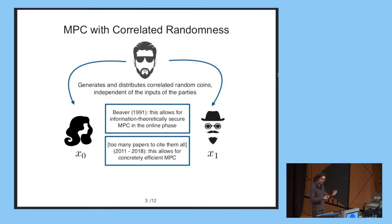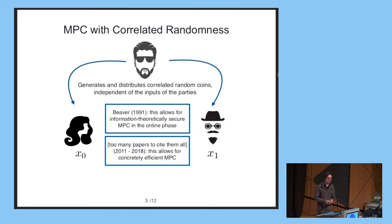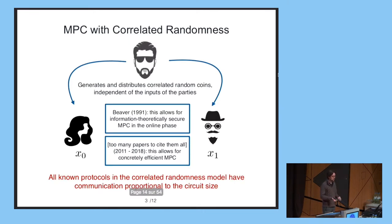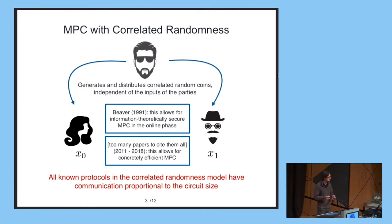These protocols work in two phases. In a pre-processing phase, the parties jointly generate some correlated random coins. Then in the online phase, the parties consume those random coins to securely evaluate the function. This secure evaluation is not only information-theoretically secure, it's also extremely fast. Yet all known protocols in the correlated randomness model for general functions require communication proportional to the circuit size of the function.